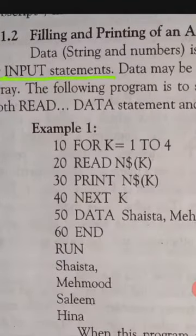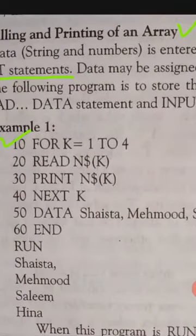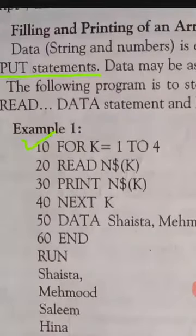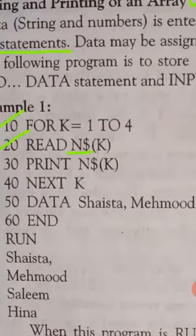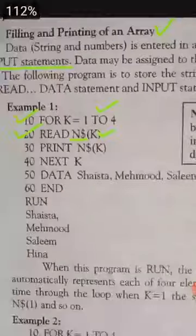Ab example number one mein aap dekhein to is mein READ DATA statement use hui hai, aur saath mein PRINT statement use hui hai for printing an array. Ab first is line number 10: FOR K = 1 TO 4. Is mein ek variable hai K jis ki value hai 1 se lekar 4 tak. Is mein 4 values store karni hain. Chunke loop hum ne start kiya hai, to sabse pehle hum READ statement use karte hain values ko store karne ke liye. Variable jo hum ne liya hai that is N$ - yani yeh ek string variable hai - to hum ne array ko define karne ke liye N$(K) naam liya hai.